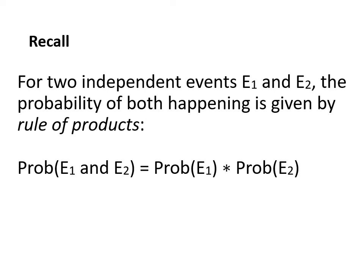First we are going to recall the rule of products from our last lecture. If we have two independent events e1 and e2, then the probability of both of them happening is given by this rule. To get the probability of both e1 and e2 we have to multiply the probability of e1 with the probability of e2. This works only if the two events are independent.